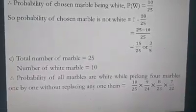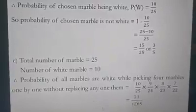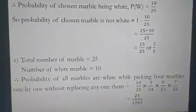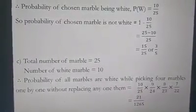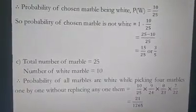Since each pick is independent of the others in terms of multiplication, all four probabilities are multiplied together: ten-twenty-fifths times nine-twenty-fourths times eight-twenty-thirds times seven-twenty-seconds. Simplifying this gives twenty-one over one-thousand-two-hundred-sixty-five. That is the probability that all four marbles picked without replacement are white.